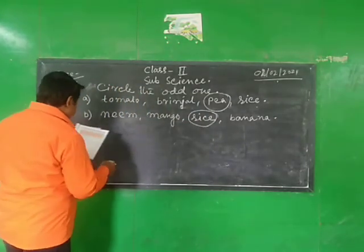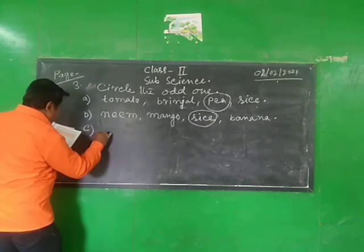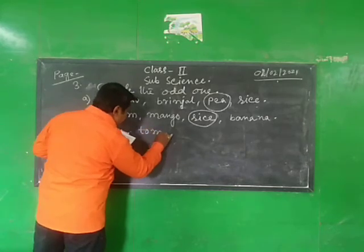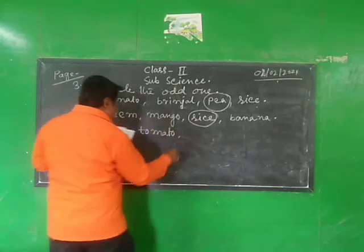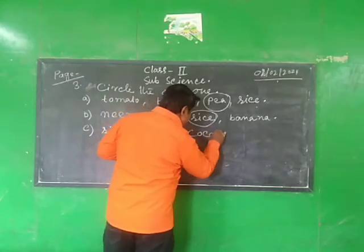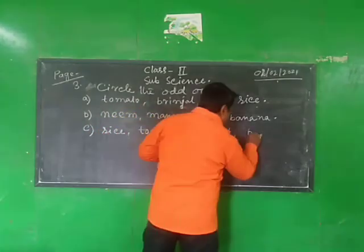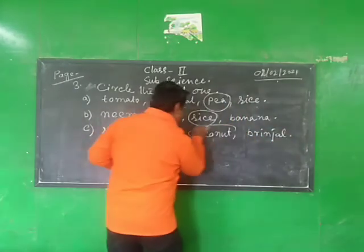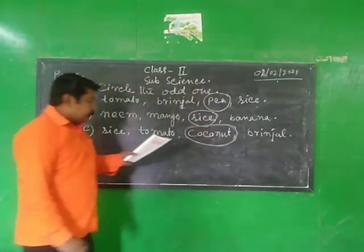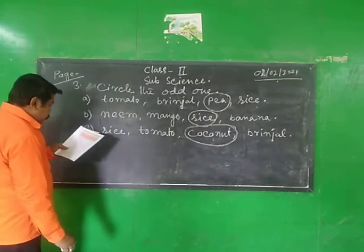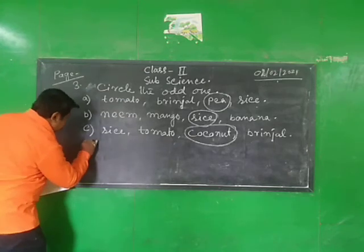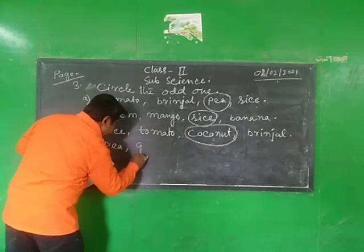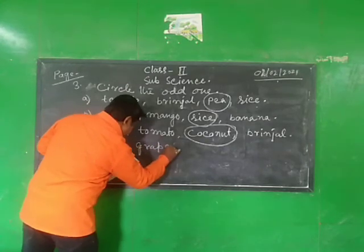Rice, tomato, coconut, green gel. We write the answer — surgeon. Grape by grape. Leaves and stems, body strength.